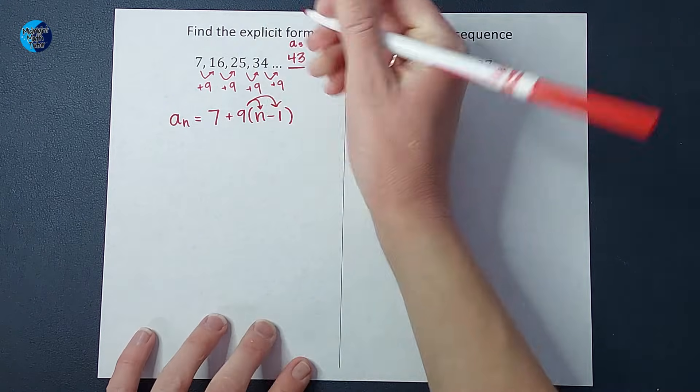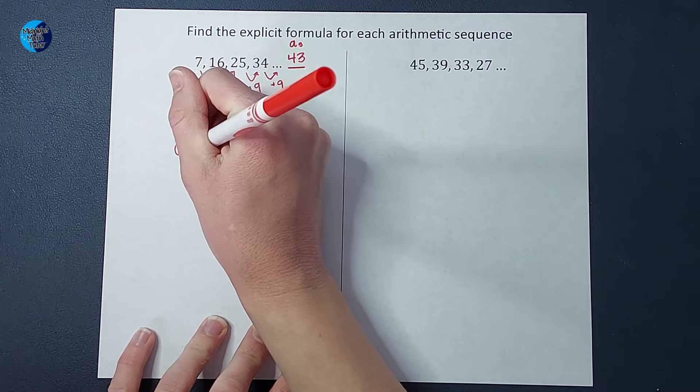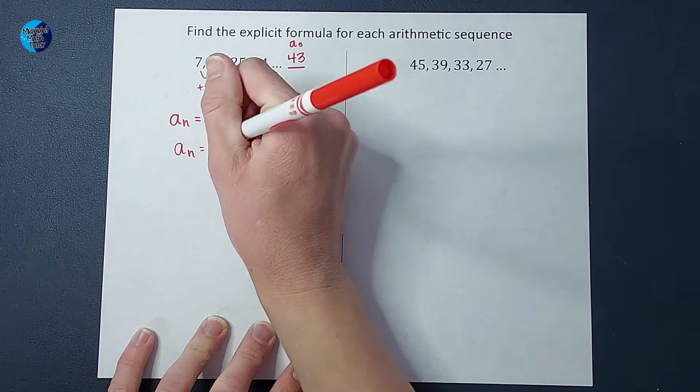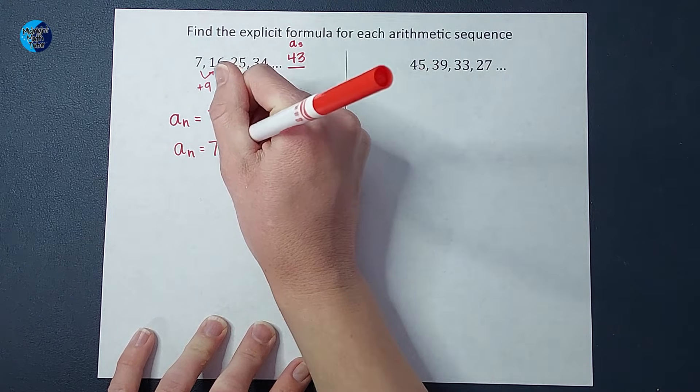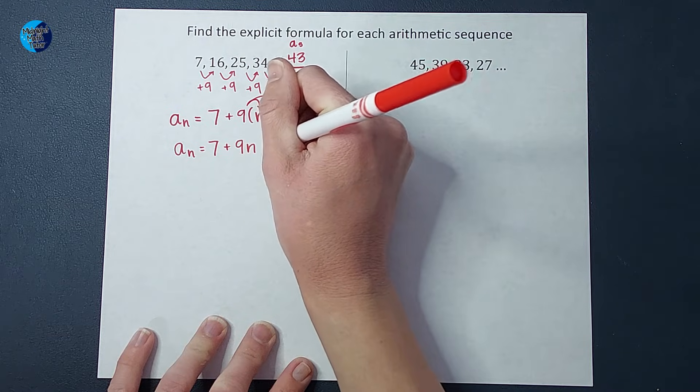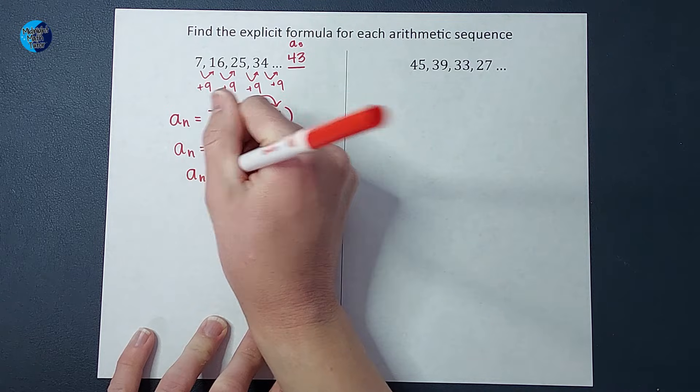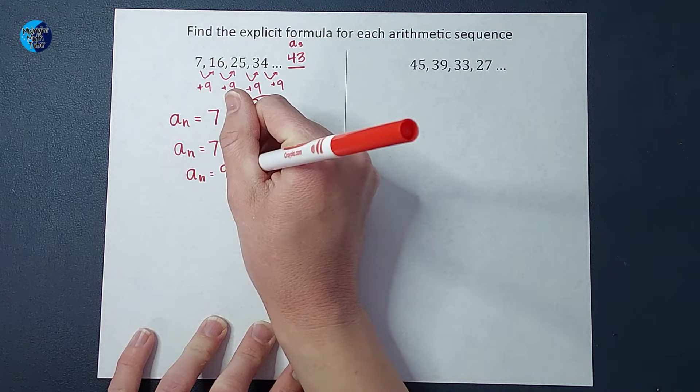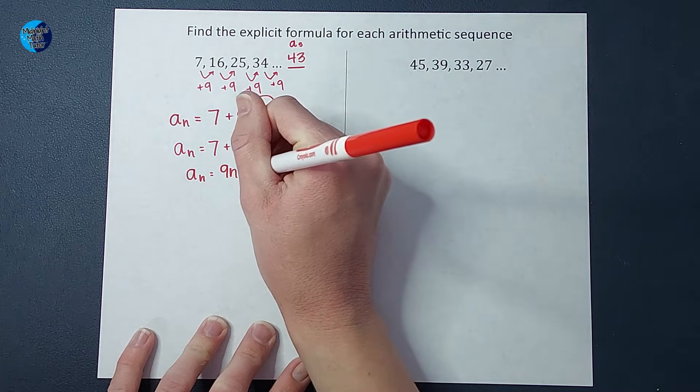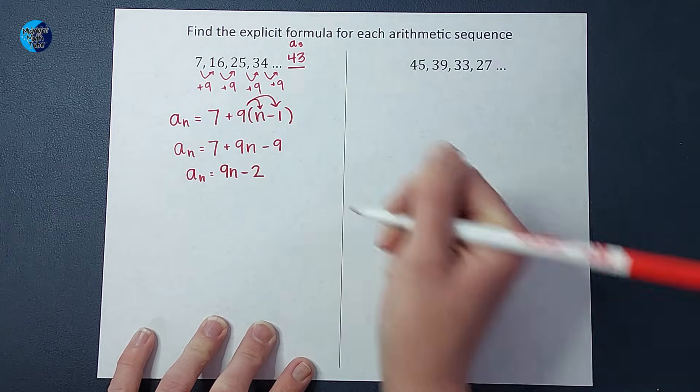We're going to distribute the nine n and then we're going to check our answer and make sure we're feeling good about it. So I'm going to have seven plus nine n minus nine, and then I'm going to combine like terms and I end up with nine n minus two.